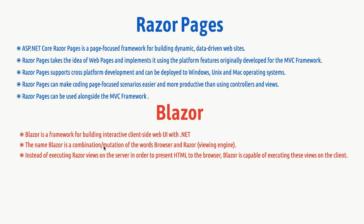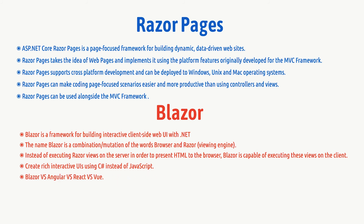You can share server-side and client-side code and app logic written in .NET, rendering the UI as HTML and CSS for wide browser support including mobile. Instead of executing Razor views on the server — which is what happens with Razor Pages and MVC Core — Blazor executes these views on the client, with no need to go to the server. It allows you to create rich interactive UIs using C# instead of JavaScript, which is a brave move from Microsoft. Blazor is comparable to Angular, React, or Vue as they are all client-side frameworks.